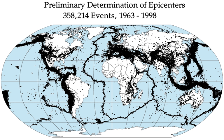Earthquakes can cause fires by damaging electrical power or gas lines. In the event of water mains rupturing and a loss of pressure, it may also become difficult to stop the spread of a fire once it has started. For example, more deaths in the 1906 San Francisco earthquake were caused by fire than by the earthquake itself.